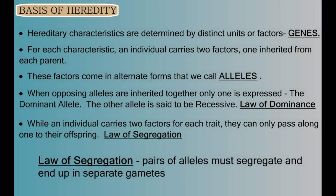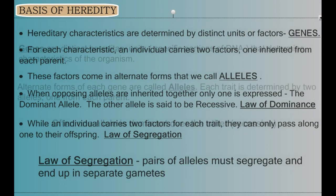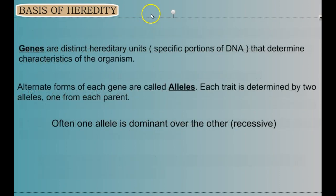In our example, the trait of height was not being controlled by one factor but instead two. If it were controlled by only one, how could shortness go away and then return? So an individual receives two factors for each trait, one from each parent, and those factors came in two forms — tall and short — and one dominated the other. In this case, tall was the dominant trait and was expressed when both are present at the same time.